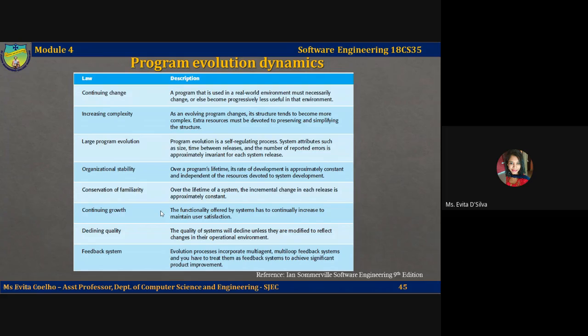This determines the gross trends of the system maintenance process and limits the number of possible system changes. Lehmann and Belady suggest that this law is a consequence of structural factors that influence and constrain system change, and organizational factors that affect the system evolution process.